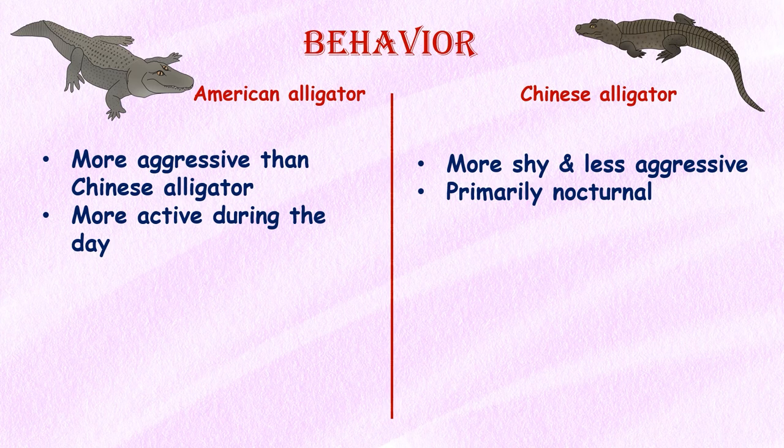Behaviour. Although alligators are naturally not very aggressive, the American alligator is more aggressive than the Chinese alligator, while the Chinese alligator is more shy and rarely interacts with humans. American alligators are also known to be more active during the day, while Chinese alligators are primarily nocturnal.